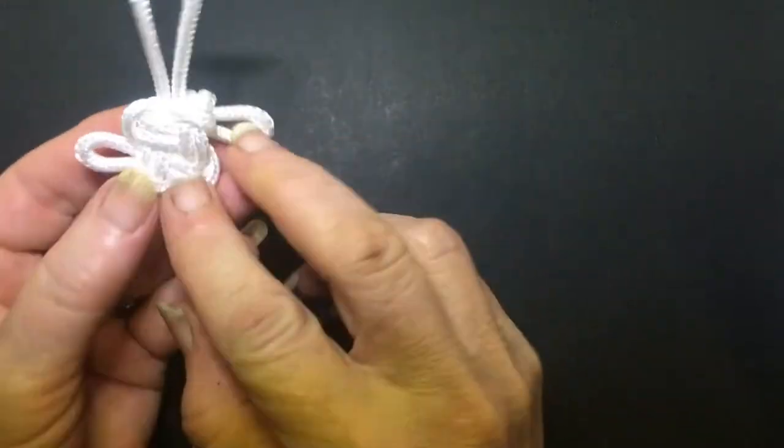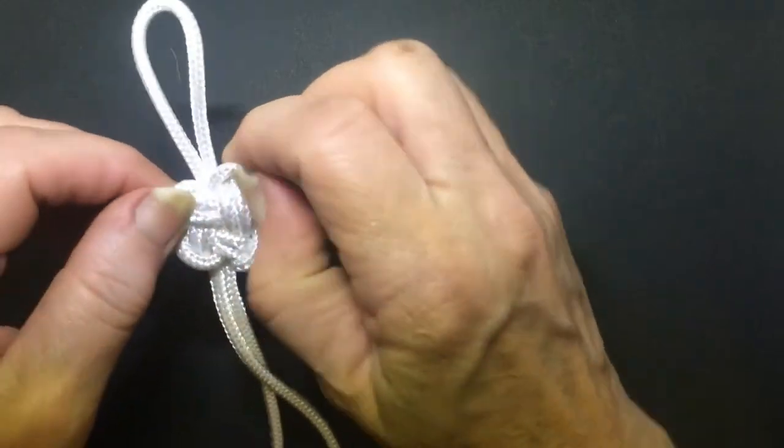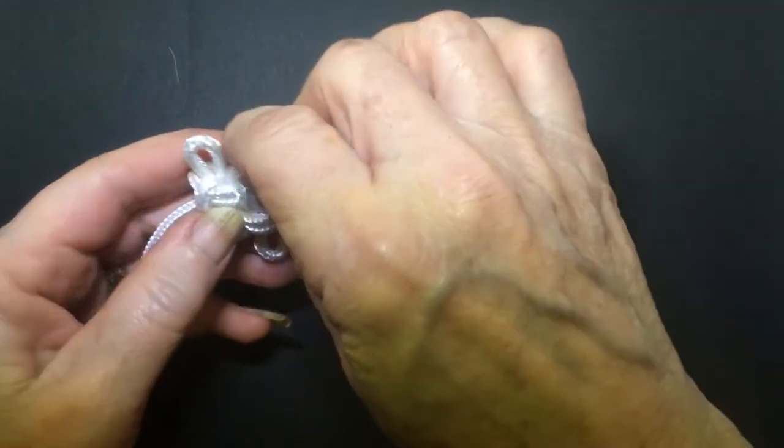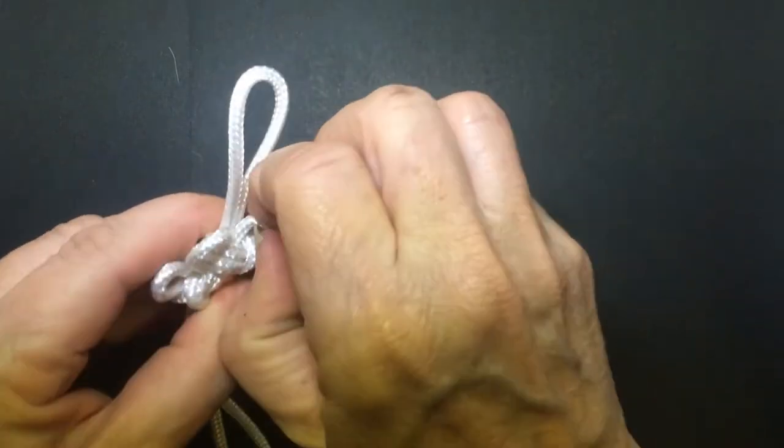Now you'll see at the back, if you flip it over, you've got some little loose ones here. Now these ones can be pulled out to make your secondary loops. So just pull them out as far as you want them to go.